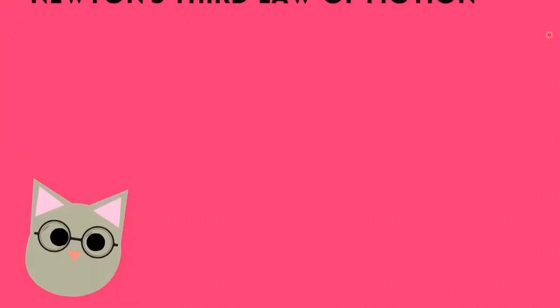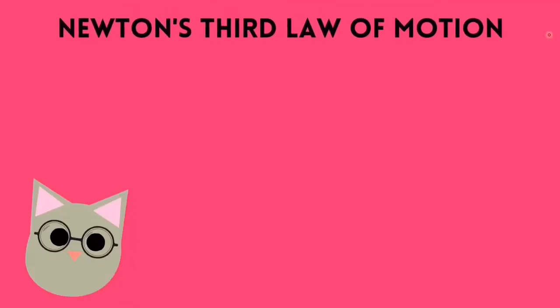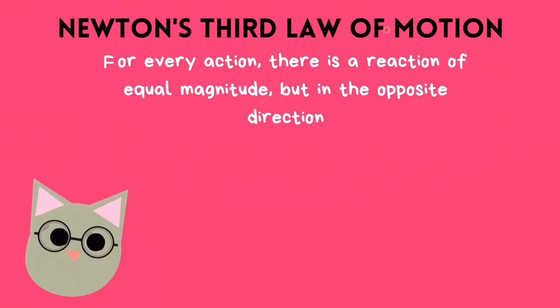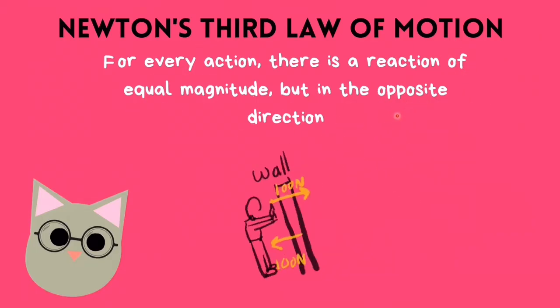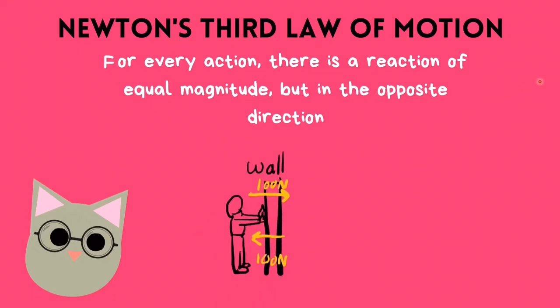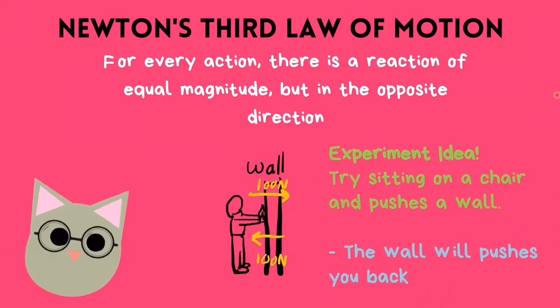The concept of impulse and impulsive force involves both actions and reactions, which can be explained with Newton's third law of motion. This law states that for every action, there is a reaction of equal magnitude but in the opposite direction. You could actually try out an experiment to test this law for yourself — try sitting on a chair and pushing a wall. You will discover that the wall pushes you back and your chair might even inch back a bit.